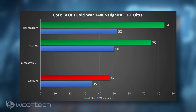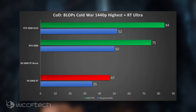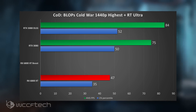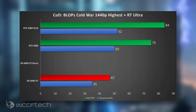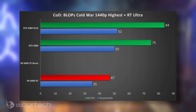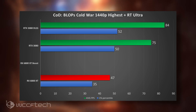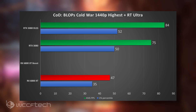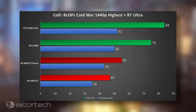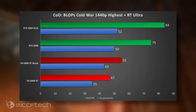Moving into Call of Duty Black Ops Cold War, we saw 47 FPS average on the 6800 XT with RT Ultra. We did test in the past that you can turn ray tracing down to medium or just shadows and get more performance, but we want to see total impact here. The 3080 hits 75 FPS. Enable Trix Boost and you go from 47 to 55 FPS — that's a 17% performance improvement just by utilizing this feature.